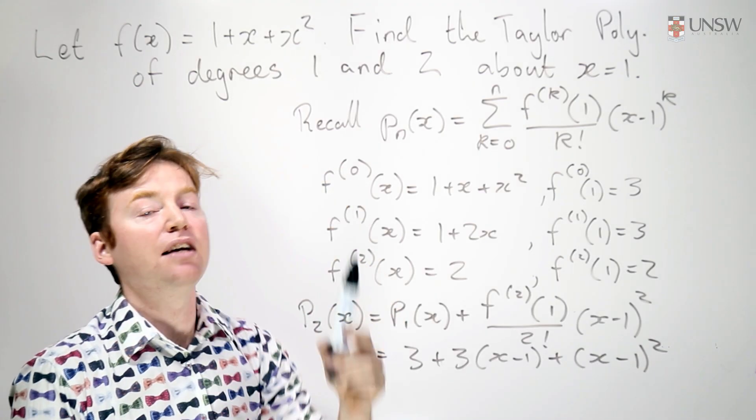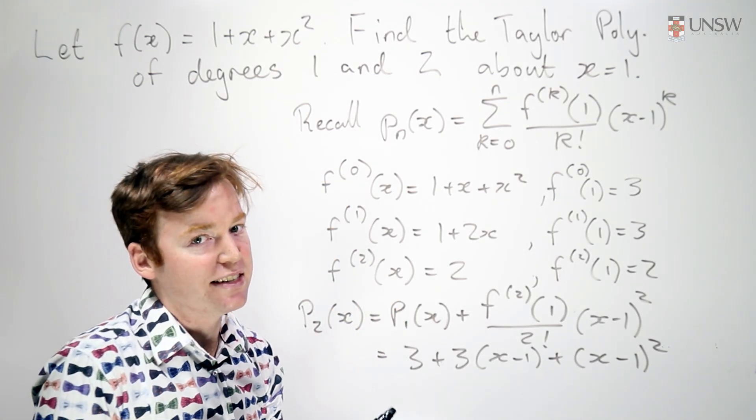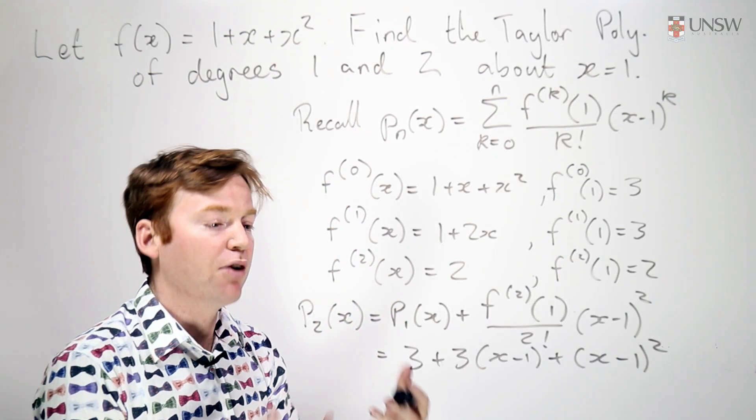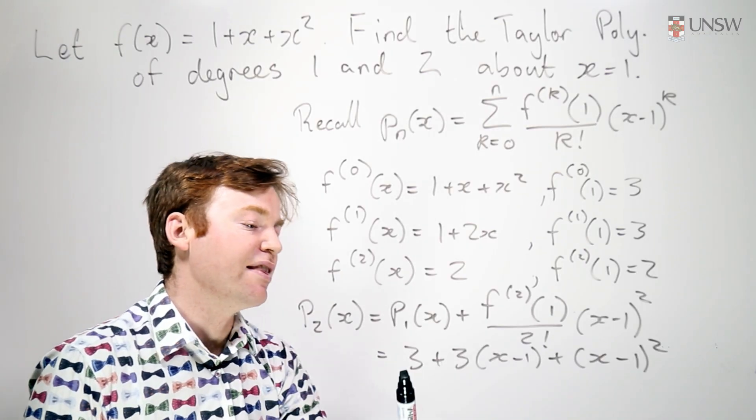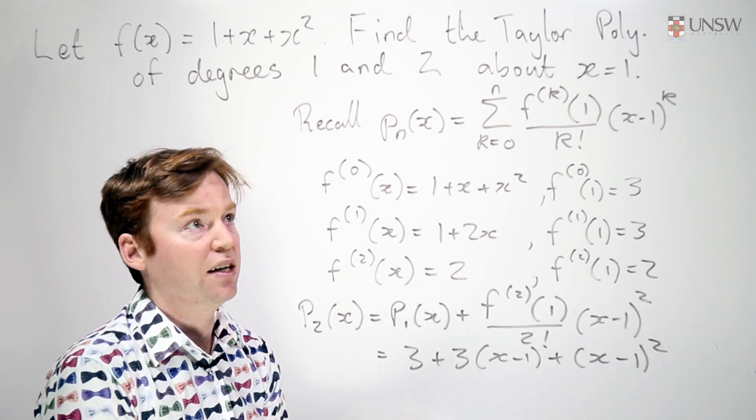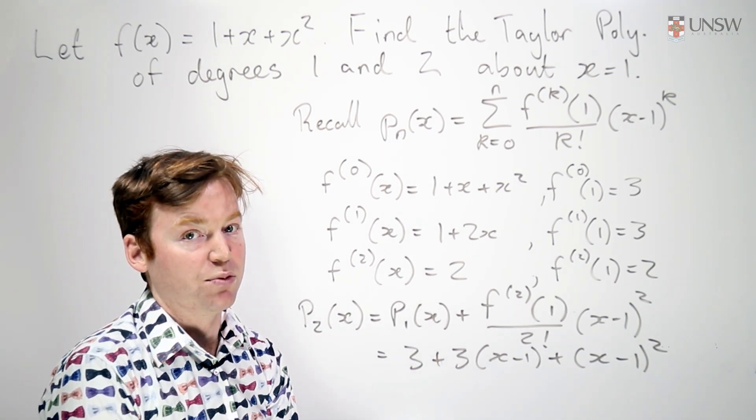Whereas this function here, even though it's the same thing, isn't expressed in terms of powers of x minus 1. So even though these are the same function, this one is what we call the Taylor polynomial for the function at x equals 1.